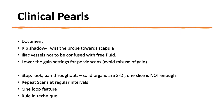That brings us to the end of the EFAST scan presentation. Some clinical pearls: make sure you have documented your findings — if you have not documented it, it has never been done. When scanning the hepatorenal or splenorenal space, rib shadows can cause nuisance; this can be avoided by rotating the probe so the marker faces the scapula. When doing a pelvic scan, be mindful of iliac vessels which can be confused as free fluid, and reduce the gain when scanning any fluid-containing structure.